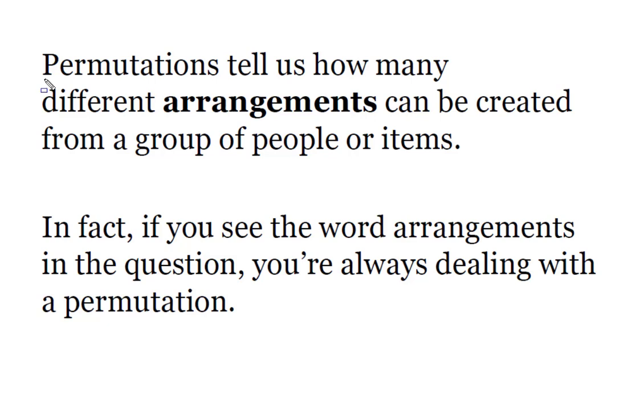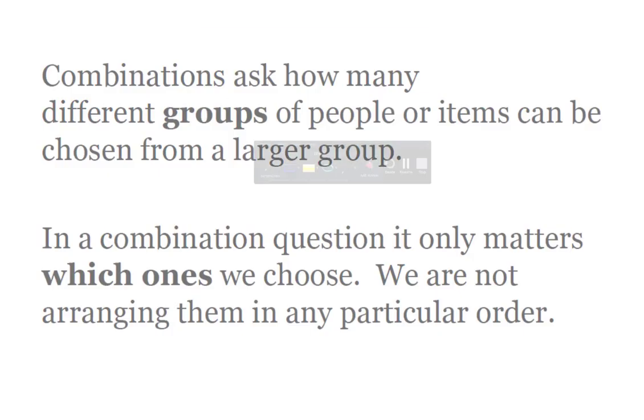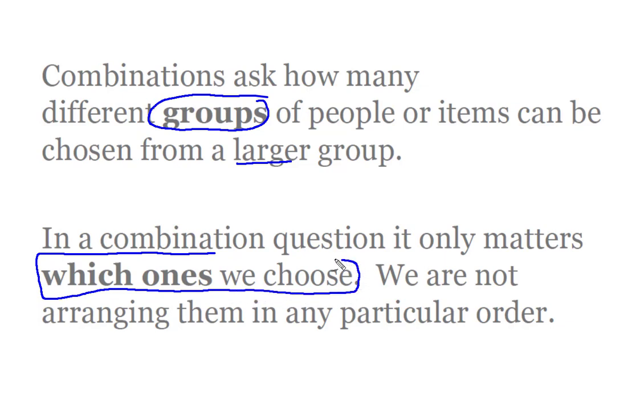Just to summarize, always think of permutations as being how many different arrangements can be made from a group of people or items, because if you see the word arrangement in your question, you're always going to be dealing with a permutation. On the other hand, combinations are asking us how many different groups of people can be made from a larger group. And in a combination question, remember, it only matters which ones we choose. We are not putting them in any particular order. We're simply trying to make groups, smaller groups, from the larger whole.